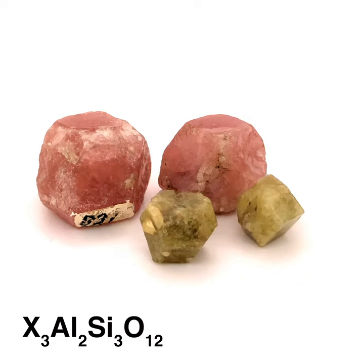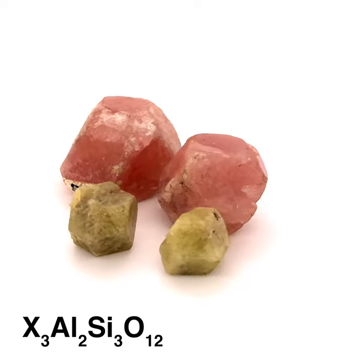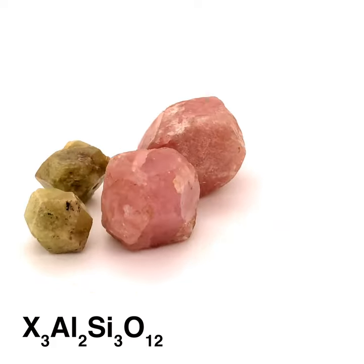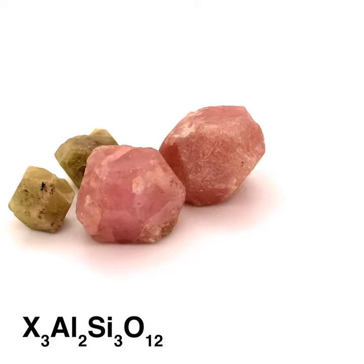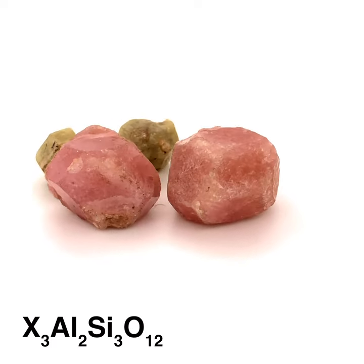Although red is the most common color, garnet can occur in any color of the rainbow, and its color is controlled by the cation that sits in the X spot in the chemical formula.